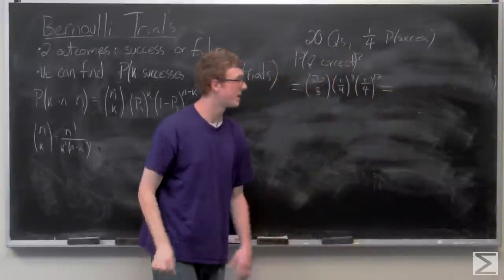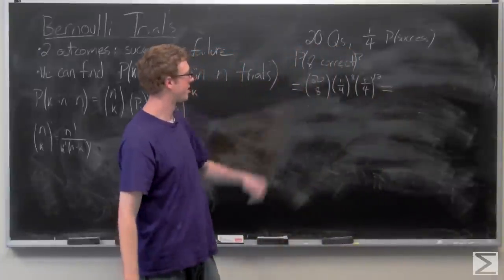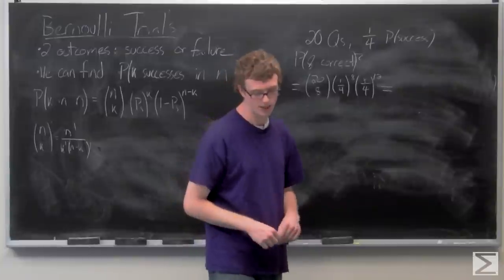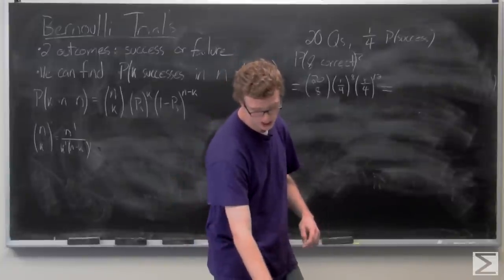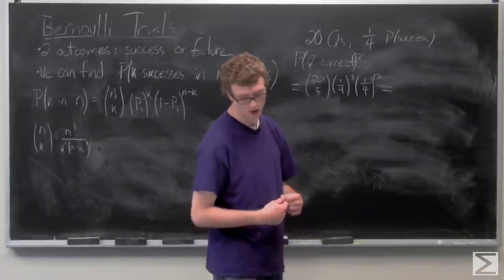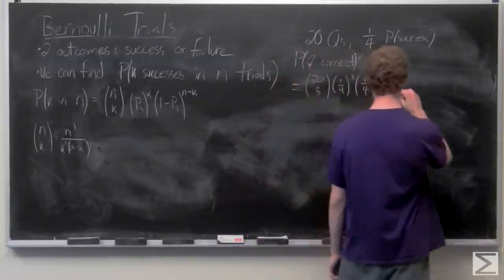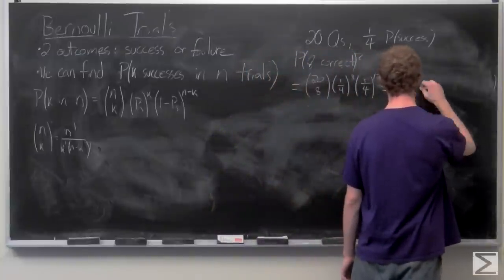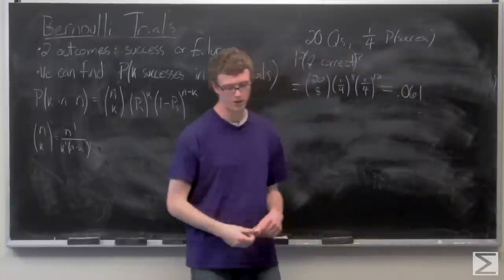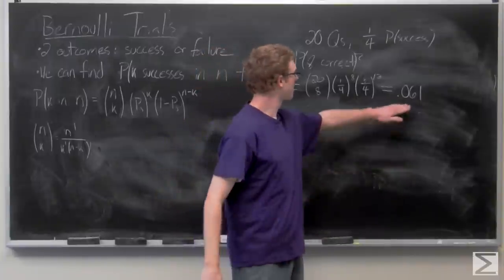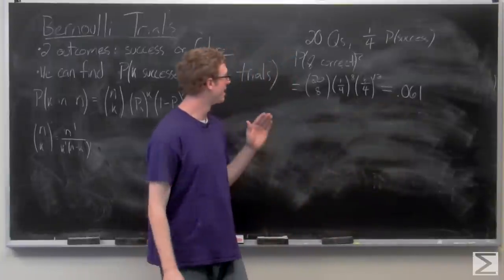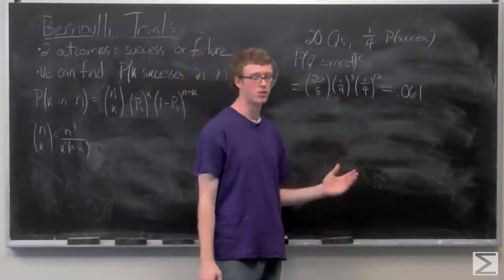Now you're going to need a calculator to go ahead and calculate this all out, otherwise it would be pretty messy. But when you do use your calculator, you get 0.06088867 or 0.061. And this calculated the probability of getting exactly eight correct of the 20 questions.